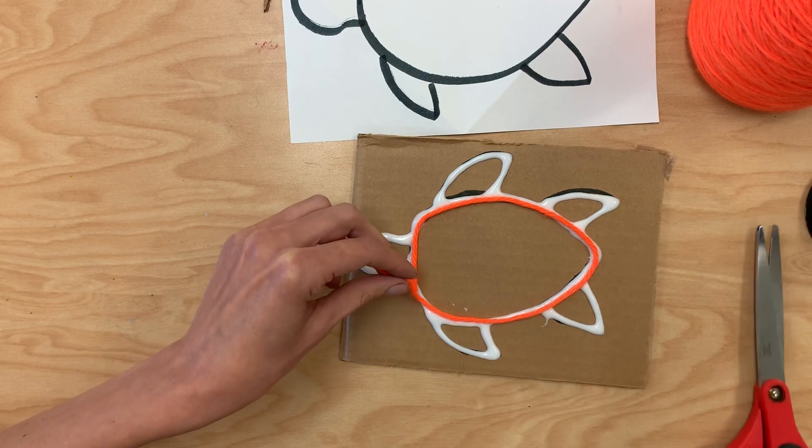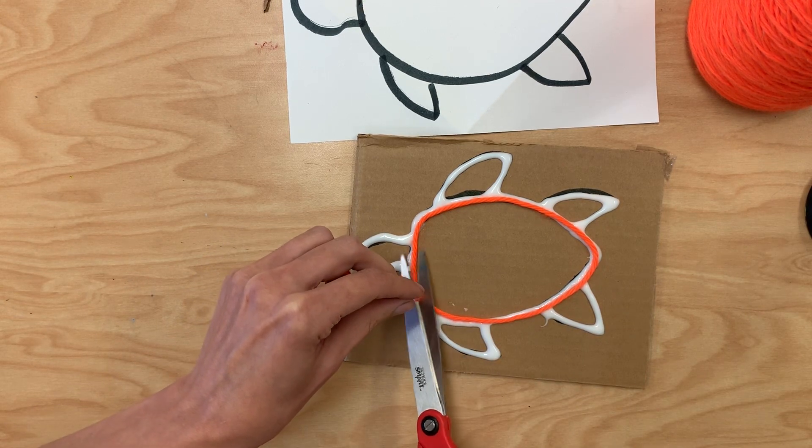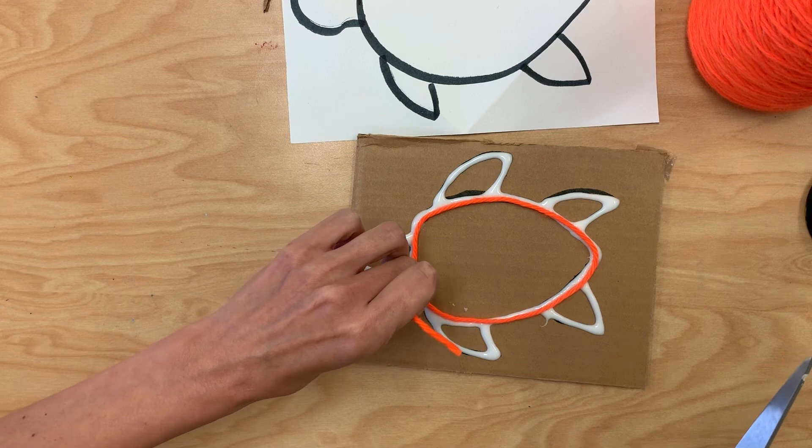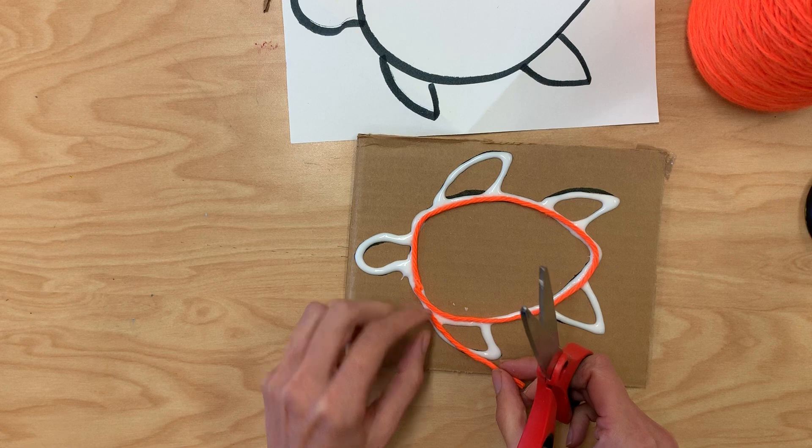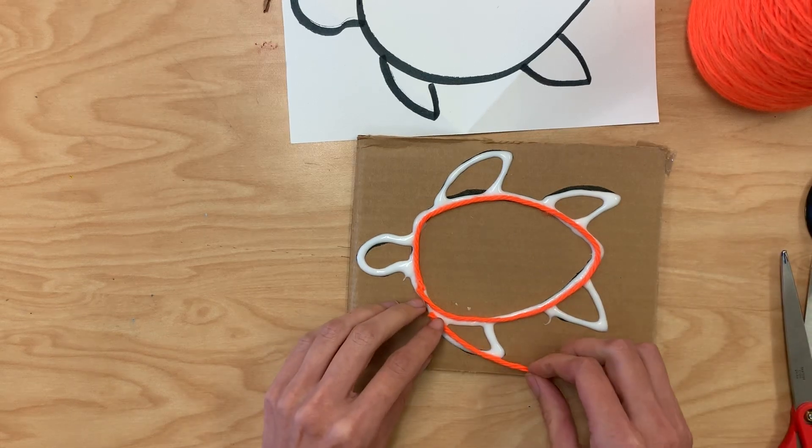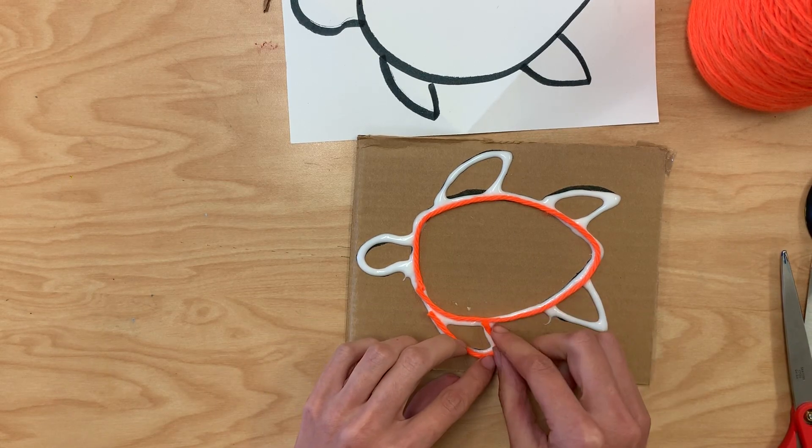Now this is a little bit too long, so what I'm going to do here is I'm just going to cut it so I don't have too much of that extra yarn hanging off. And I can use this other piece for something different. This is actually kind of perfect in length for his little fin or his little leg.